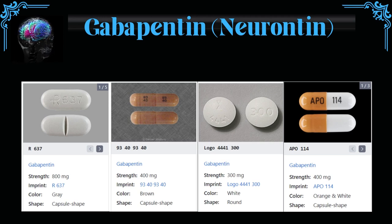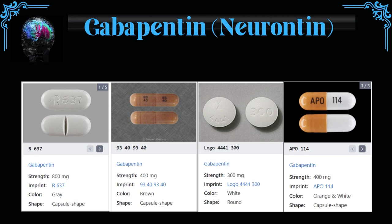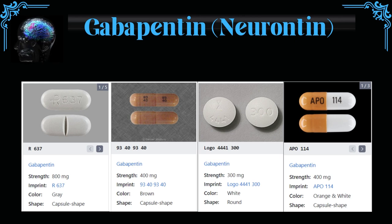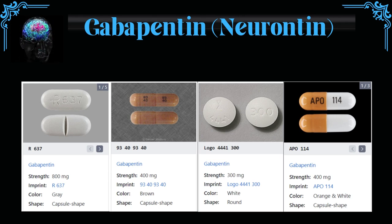Gabapentin, brand name Neurontin, is an anticonvulsant medication that is used to treat mood disorders and various neurological conditions, including epilepsy, neuropathic pain, and restless legs syndrome.